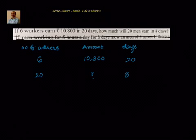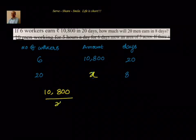Suppose we have 3 variables — how do we solve this problem? 6 workers earn 10,800 in 20 days. How much will 20 men earn in 8 days? We will write this amount as x. Then, 10,800 divided by x is equal to — we are taking the variable for which we have to find the value on the left hand side, then writing equal to, and then comparing each of the other variables to see whether they are directly or inversely proportional.